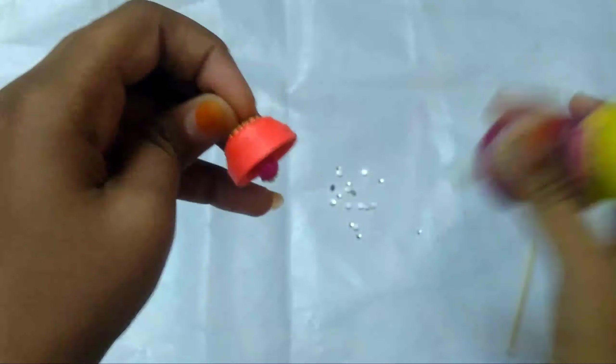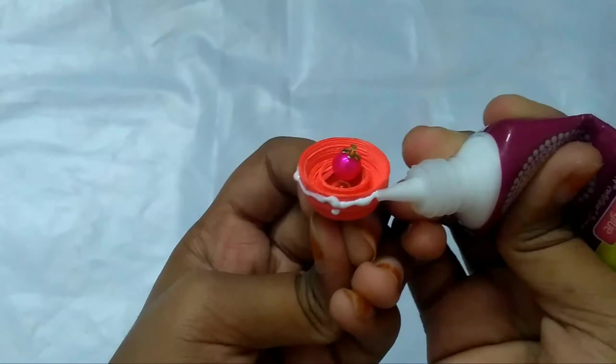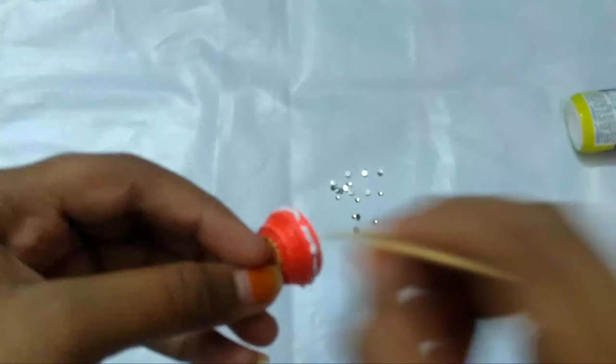Now take the glue and apply it to the jhumka, and attach the stones to the jhumka.